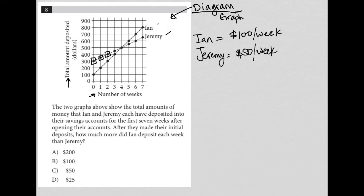So the question just wants to find out how much more did Ian deposit each week? Well, it's just a $50 difference, right? So our answer here must be choice C.